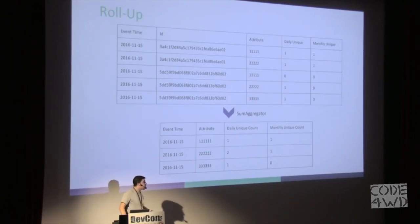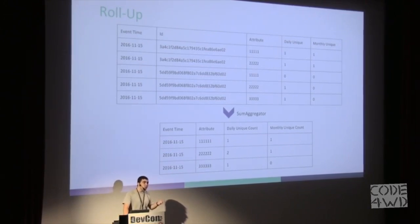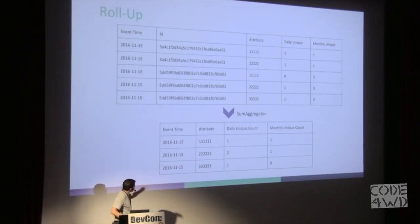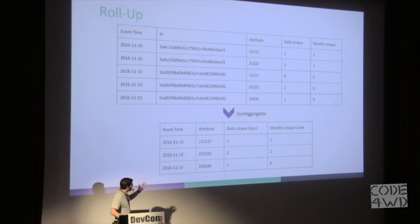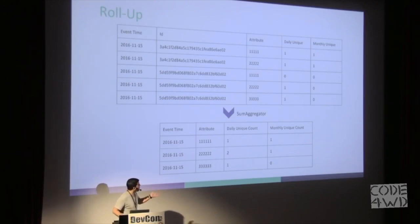Druid gains its speed mostly from a feature called rollup. The idea behind rollup is that instead of performing aggregations during query time, all the aggregations are done during indexing time. If we take a look at the example here, we have a simple dataset — a list of events — and for each event we have a timestamp, a device ID, the attributes assigned to that device, and two flags indicating whether this is the first time we assigned this attribute today and this month.